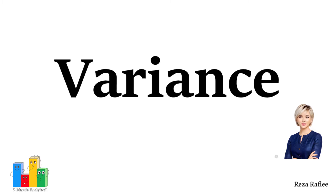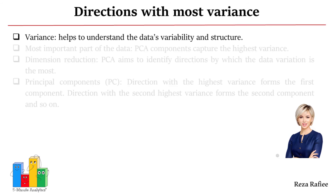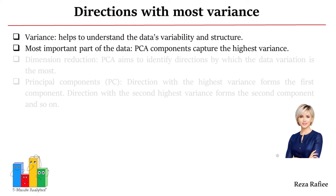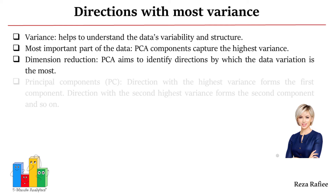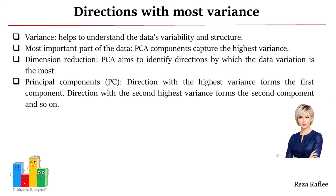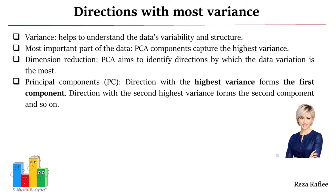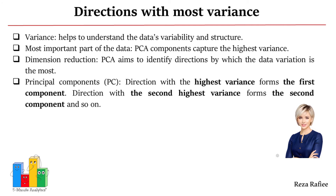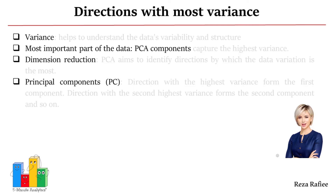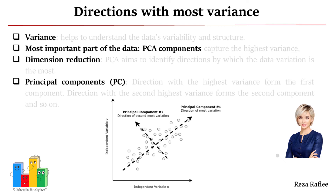In a simple definition, PCA works by focusing on variance, which is how much things change or differ in a data set. In PCA, variance is a critical aspect in understanding the data's variability and structure. The most important part of the data from a PCA perspective is capturing the components with the highest variance. PCA aims to reduce the dimensionality of the data by identifying the directions, called principal components, along which the data varies the most. These principal components are ordered by the amount of variance they explain, with the first capturing the highest variance, followed by the second, third, and so on. The most crucial part is identifying and retaining the principal components that explain the most variance, as they represent the most significant and informative aspects of the data.